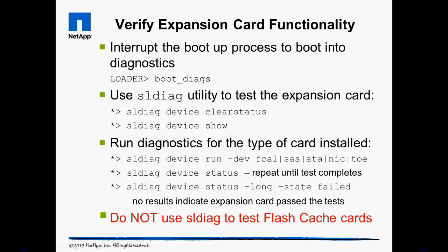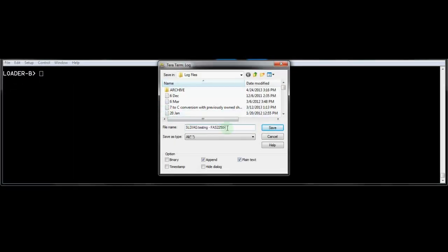Verify expansion card functionality. In this slide, we will use testing of an expansion card as an example of using SLDIAG. The proper way to start up the diagnostic tool is to start from the loader prompt and use the boot_diags command. The next step is to clear any previous diagnostic results and then display a list of all the devices in the system. There are multiple tests that can be enabled, configured, or disabled, but in most cases you will use the predefined test for a device by specifying the device type. Tests run in the background, so you need to check on the status of long-running tests. When a test finishes, a console message will appear stating that the test either passed or failed. You will need to add the dash-long flag to get details about the test results. You should not use SLDIAG to test flash cache cards unless directed by NetApp technical support, as the SLDIAG tests can be destructive to these cards and are not enabled by default. You should consider logging mandatory when running system diagnostics to permanently capture all output.